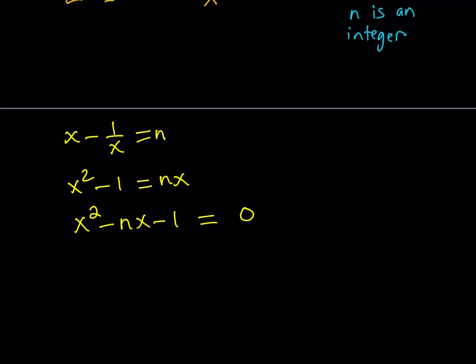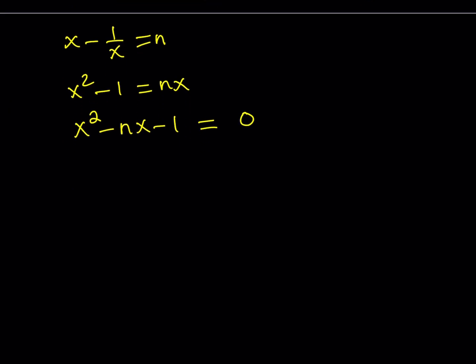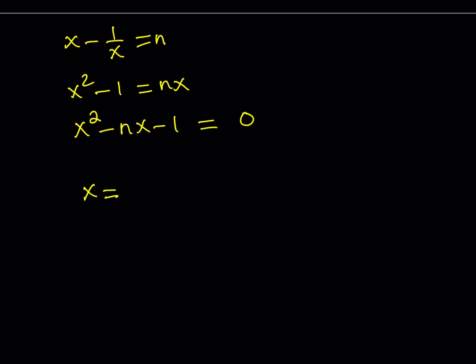So n is an integer and we have a quadratic equation. Since we don't know what n is and n could be any integer, we use the quadratic formula. This doesn't seem to be factorable, so: x equals n plus or minus the square root of n squared plus 4, all divided by 2. Here a is 1, c is negative 1, so their product gives us positive 4.